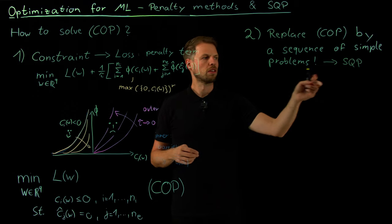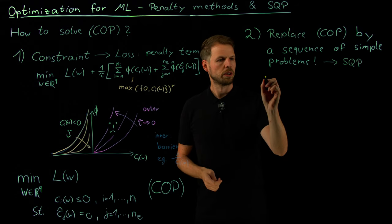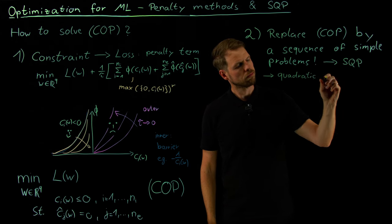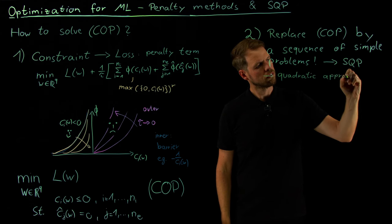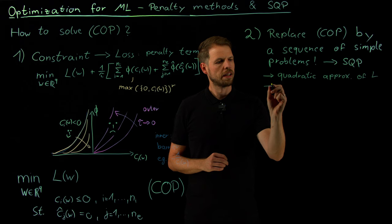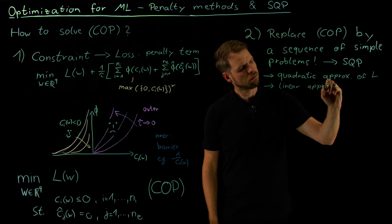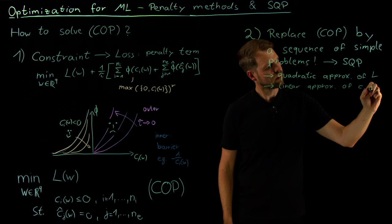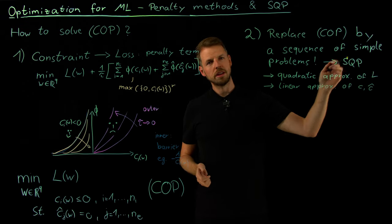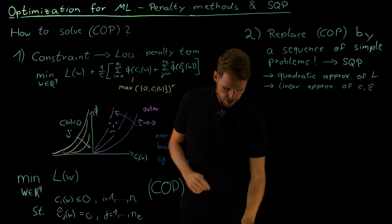So we're saying instead of solving one hard problem, let's solve many problems, which is fine if the individual problems are simple. And so the sequence is what gives this the name of sequential quadratic programming or SQP. So sequential means a sequence. QP means a quadratic program, which means a quadratic loss function and linear constraints. So this is what we're going to use. Quadratic loss function or a quadratic approximation of L. And a linear approximation of C and C hat. And so all of a sudden, we need to solve more than one problem, but the sequence of easily solvable problems.